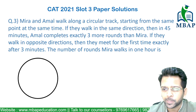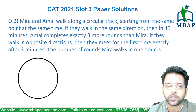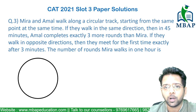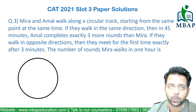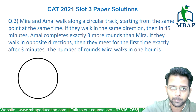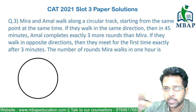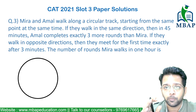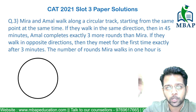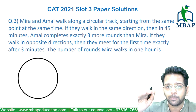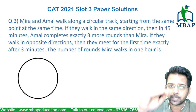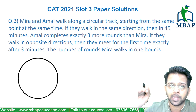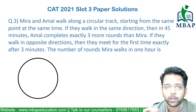Let's look at the next question from time, speed and distance — a slightly easy question. Meera and Amal walk along a circular track starting from the same point at the same time, either in the same direction or the opposite direction. If they walk in the same direction, then in 45 minutes Amal completes exactly 3 more rounds than Meera. If they walk in the opposite direction, they meet for the first time in 3 minutes.